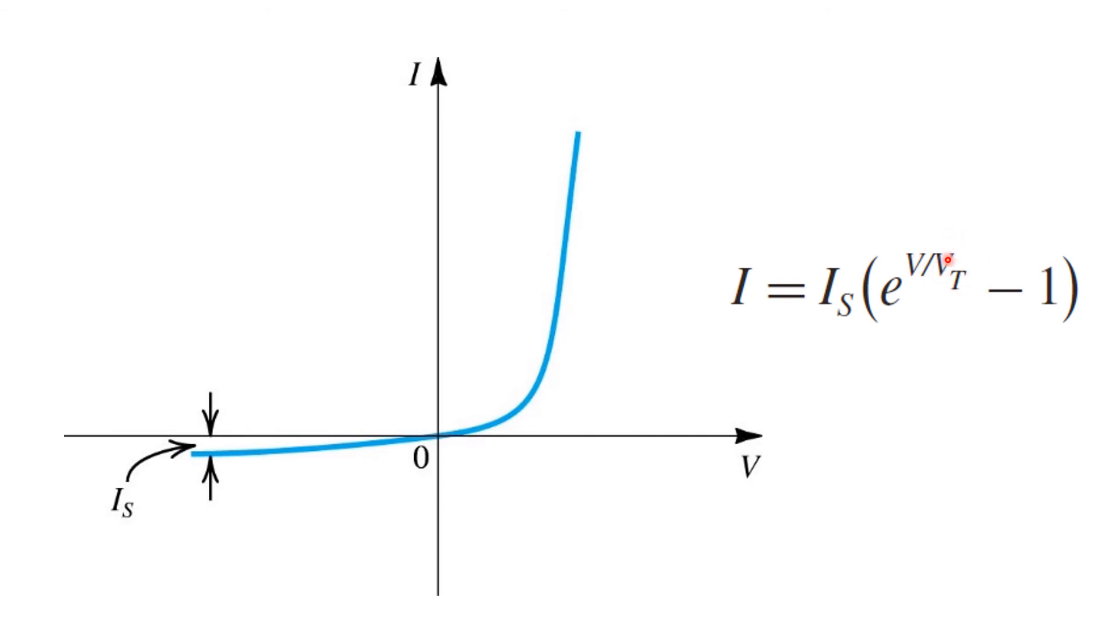Showing up in the exponent is the thermal voltage VT, which is a value of approximately 25 millivolts at room temperature.